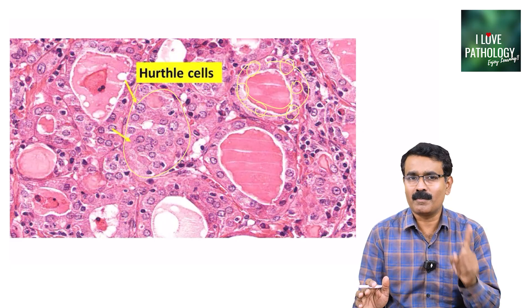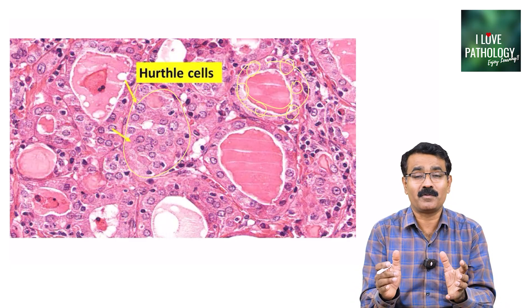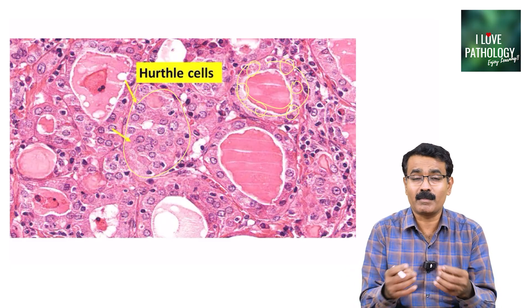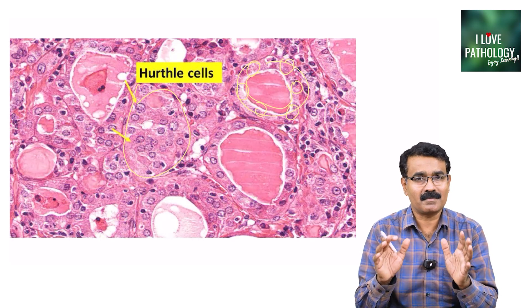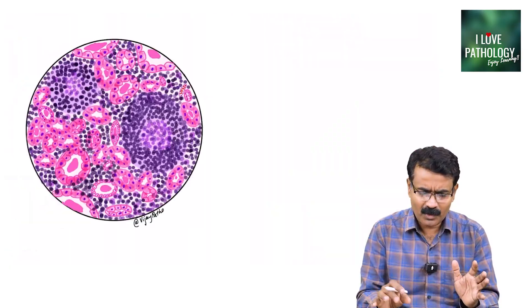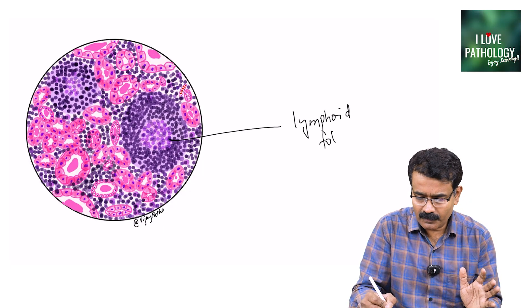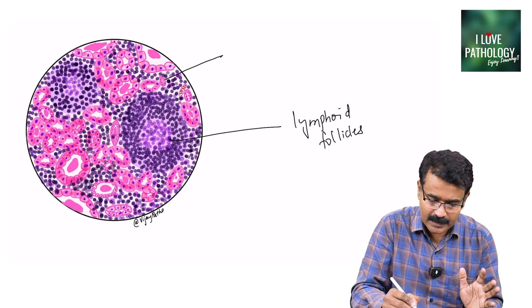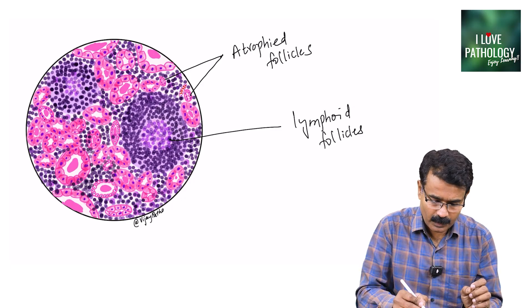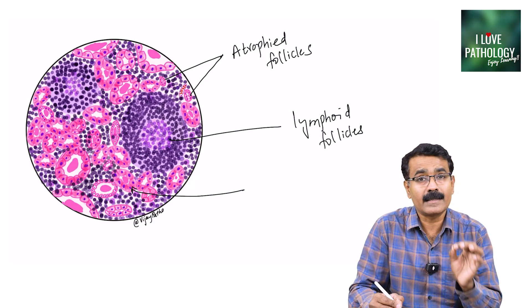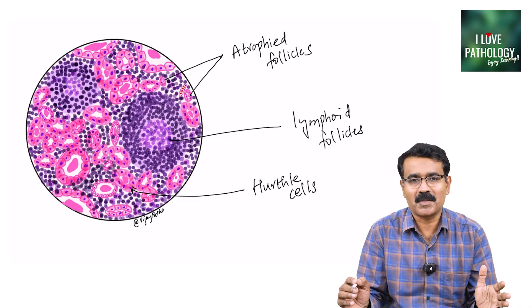In Hashimoto's thyroiditis — an autoimmune disease — you should demonstrate lymphocytes, plasma cells, and lymphoid follicles, as well as the thyroid follicular epithelium showing degenerative changes in the form of Hurthle cells. Follicles can be atrophied with variable degrees of atrophy and dilatation. To write up Hashimoto's thyroiditis, identify lymphoid follicles with prominent germinal centers, atrophied follicles, and thyroid follicles showing Hurthle cell change. If you can depict all three findings, that covers Hashimoto's thyroiditis.